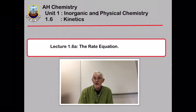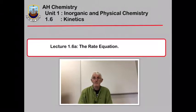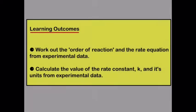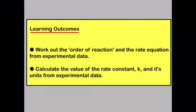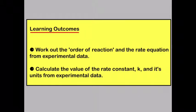We're now moving into the last section of unit 1, section 1.6 on kinetics. In this first lecture we're going to look at the rate equation. By the end of this lecture you should be able to work out the order of reaction and the rate equation from experimental data. You should also be able to calculate the value of the rate constant k and its units from the experimental data.